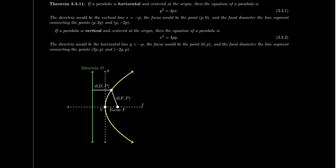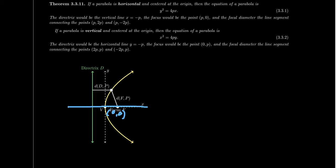Next I want to connect this geometric notion of equidistance between a point and a line to the usual algebraic formula of parabolas. We say that a parabola is horizontal if its axis of symmetry is a horizontal line. Similarly, a parabola is vertical if its axis of symmetry is a vertical line. For simplicity, suppose that a parabola is horizontal and its vertex is at the origin. In such a situation, the axis of symmetry will be the x-axis itself. The equation for this parabola will be given as y² = 4Px, where 4P was the focal diameter of the parabola.